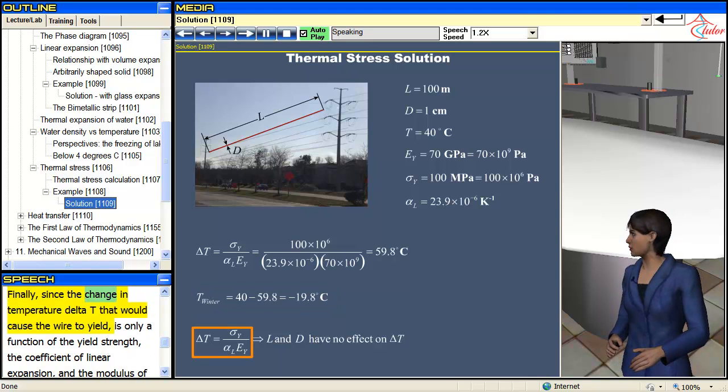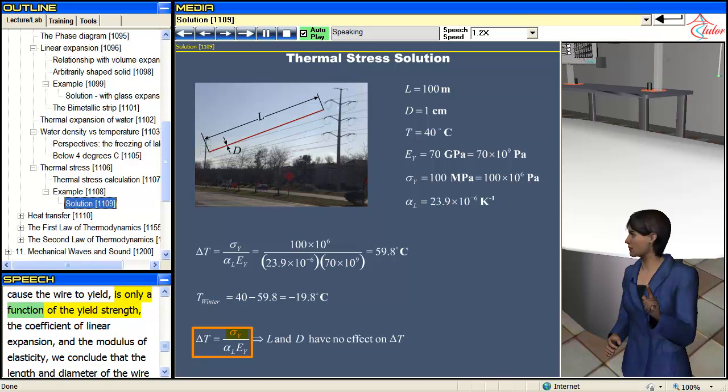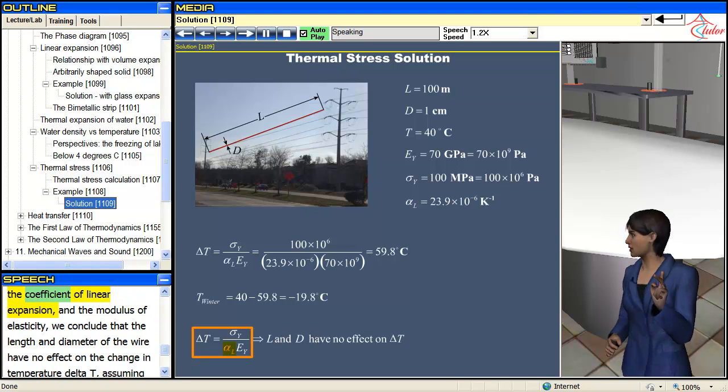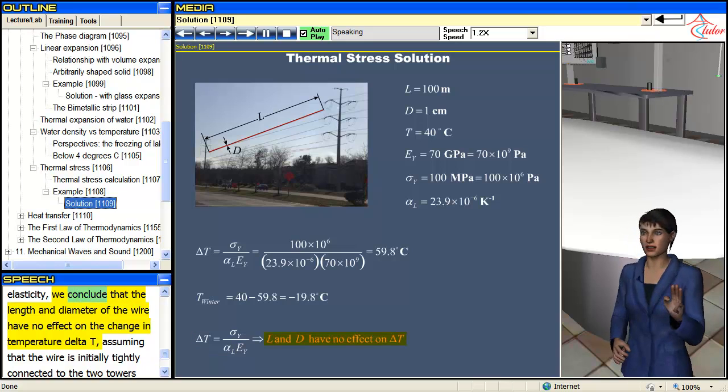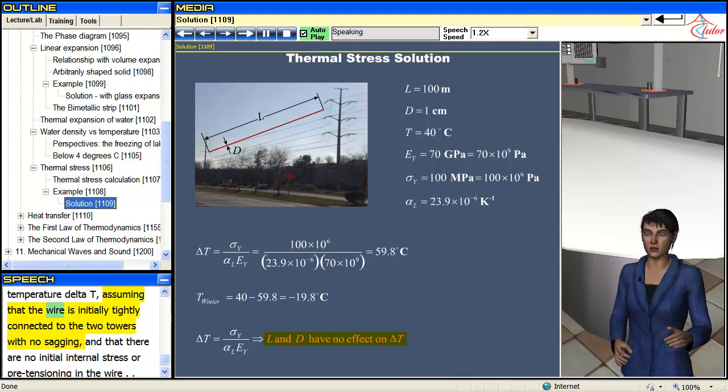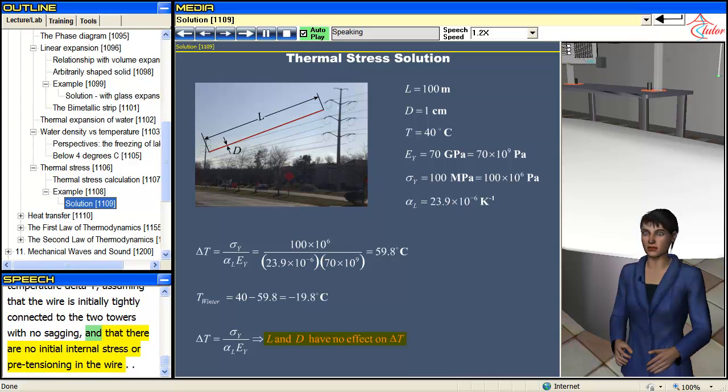Finally, since the change in temperature ΔT that would cause the wire to yield is only a function of the yield strength, the coefficient of linear expansion, and the modulus of elasticity, we conclude that the length and diameter of a wire have no effect on the change in temperature ΔT, assuming that the wire is initially tightly connected to the two towers with no sagging and that there are no initial internal stress or pre-tensioning in a wire.